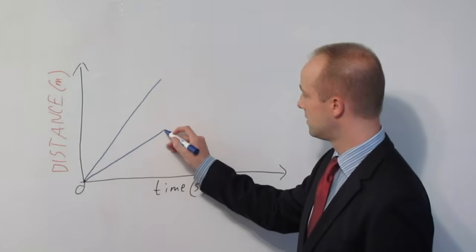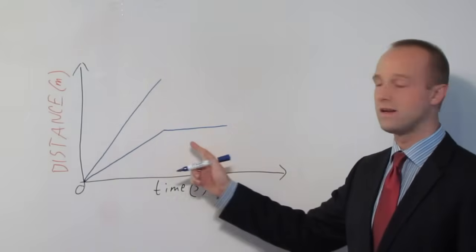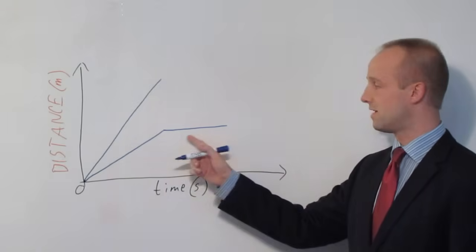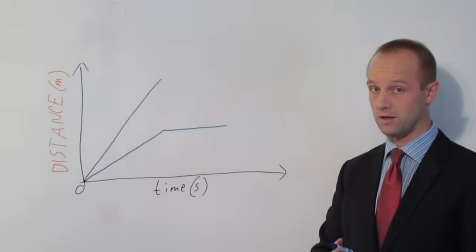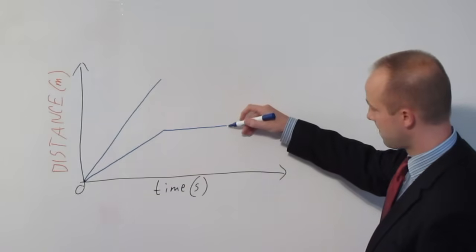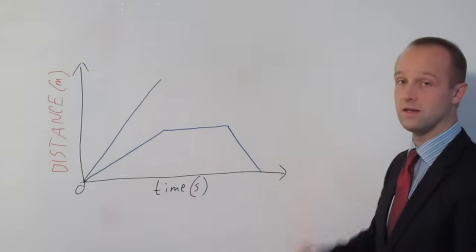This is an object that has now stopped. So if your line is going completely horizontally, completely level like that, its speed is zero meters per second. It's come to a complete halt. And finally, that's an object going backwards.